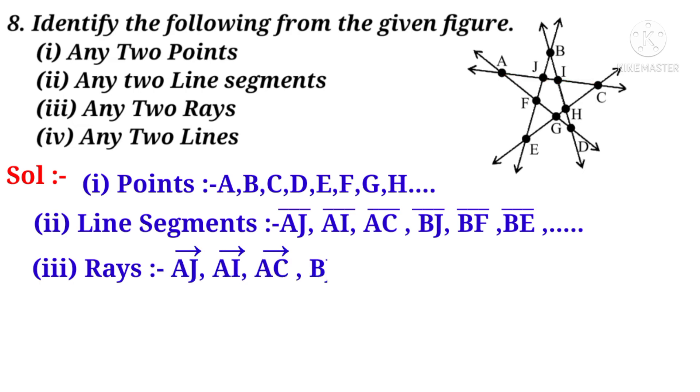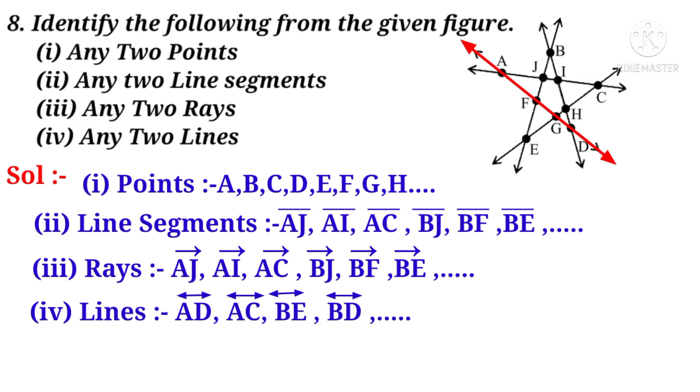Rays are the starting point is there, there is no end point. Let us take AJ, AI, and AC. Now let us take lines. There are no end points. Let us take AD, AC, BE, and so on.